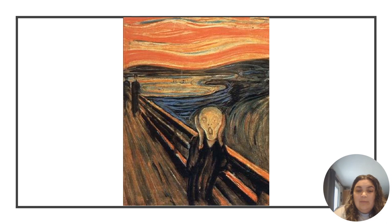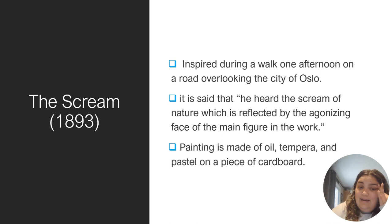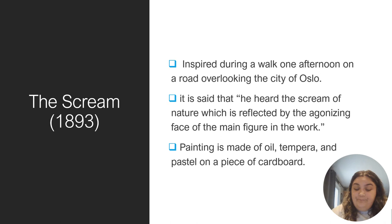This next image is called The Scream. As we can see, a figure is walking across what seems like a bridge, looking over a city or maybe some water. The sun is setting, making the sky orange. The figure looks maybe scared or screaming. This is The Scream, made in 1893. It is said to be inspired by Munch during a walk one afternoon, which would explain the orange sky.